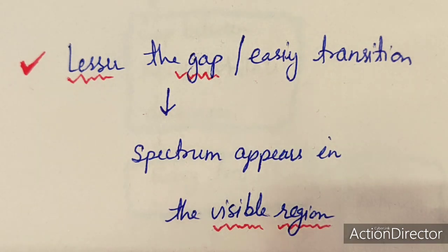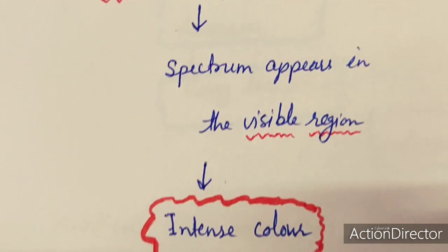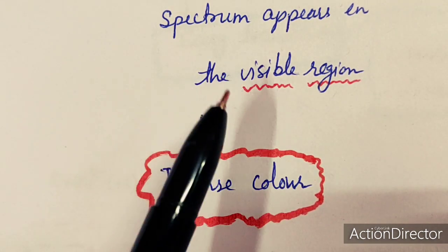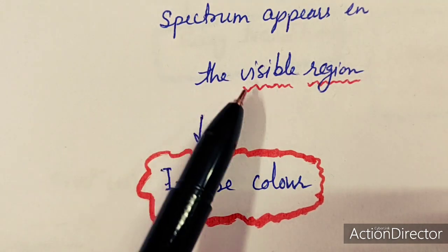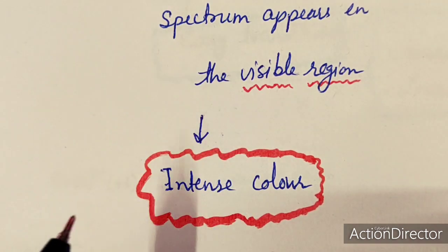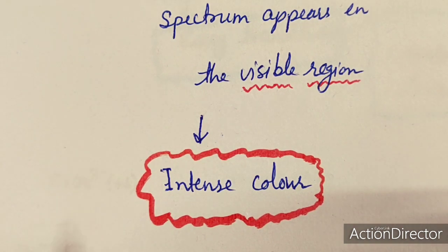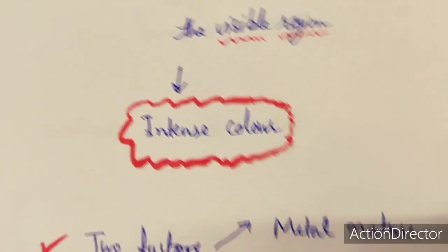If the spectrum appears in the visible region, the compound appears intensely colored, because the compound absorbs light in the visible region. If it absorbs in the ultraviolet region, the bands are intense but the compound may not have visible color.